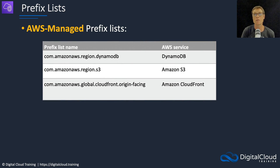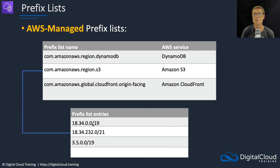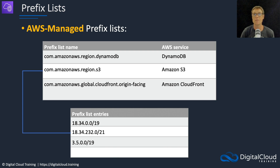Here are some examples of AWS-managed prefix lists you'll see in your account - for DynamoDB, S3, and CloudFront. Each prefix list contains the actual IP addresses for that service, which can change over time. If you want to reference Amazon S3 in a security group rule to allow certain services to communicate with S3, you don't want to hard-code IP addresses since they could change. Instead, you reference the prefix list in your route table, and whenever the entries change, you don't have to do anything. Similarly, you can consolidate sets of IP address ranges into a customer-managed prefix list, then reference them in security group rules or route tables to simplify management.